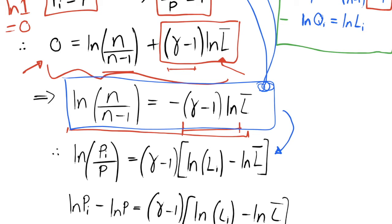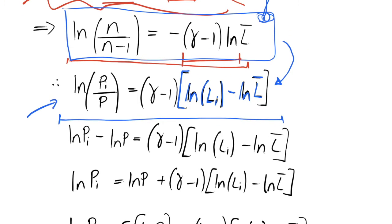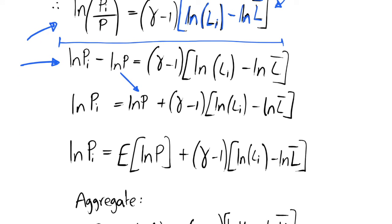We get that the natural log of price i over the aggregate price level equals gamma minus one multiplied by the difference between the firm's labour supply li and the natural level of employment l-bar. This is starting to look like a Phillips curve relationship — we have a form of output gap, currently in terms of labour supply. Using log rules, ln of pi over p equals ln pi minus ln p, and rearranging moves that term to the other side of the equation.